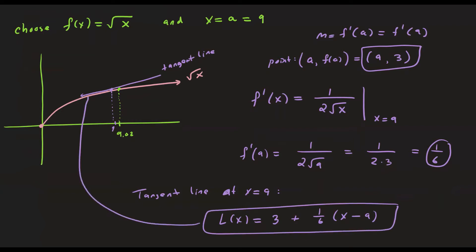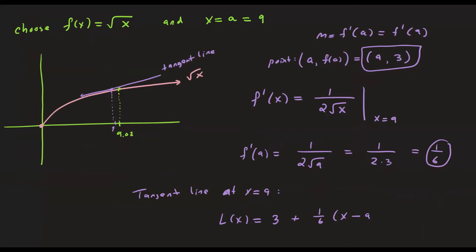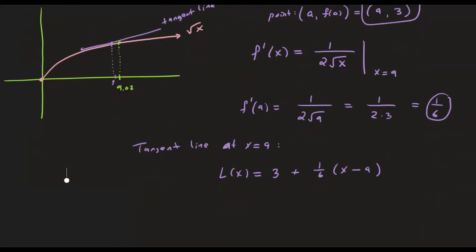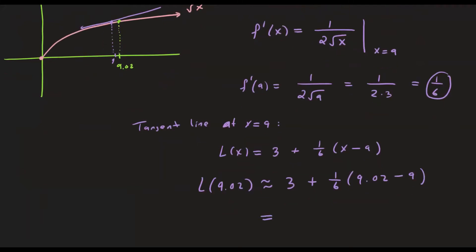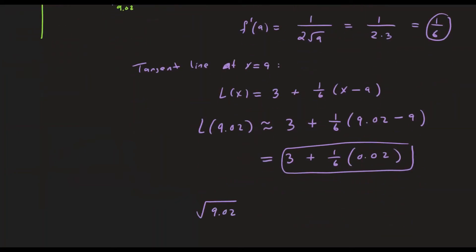Our tangent line at x equals 9 is l of x equals 3 plus 1 over 6 times x minus 9. Now to approximate square root of 9.02, we plug in: l of 9.02 equals 3 plus 1 over 6 times (9.02 minus 9), which is 3 plus 1 over 6 times 0.02. That gives us our approximated value. If you put this in your calculator and check the square root of 9.02, it will be pretty close to that value.